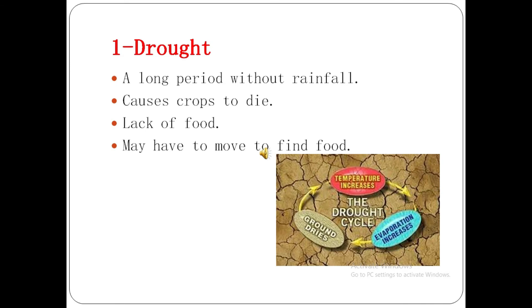The first main factor of desertification is drought. Drought is a period where there is almost no rainfall. If there is no rainfall, crops die, and if crops don't grow there is a lack of food. Animals and birds living in that area move to other areas to find food.